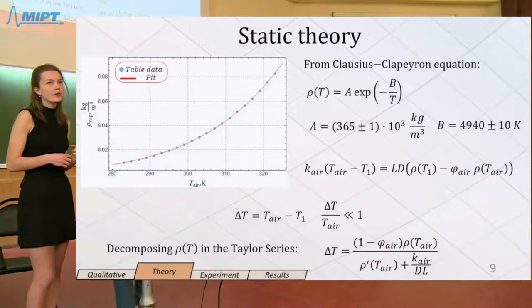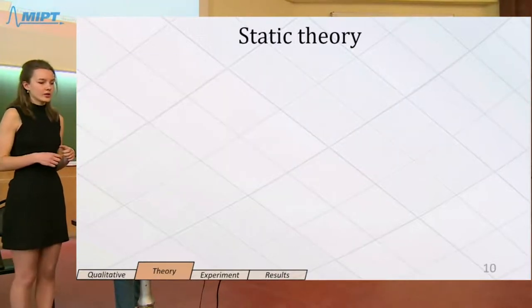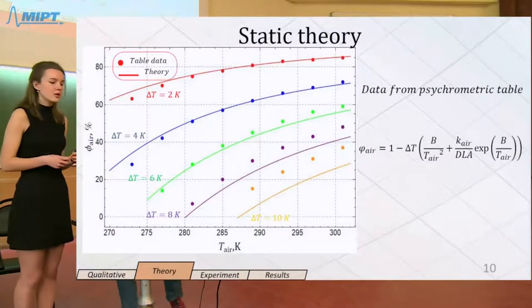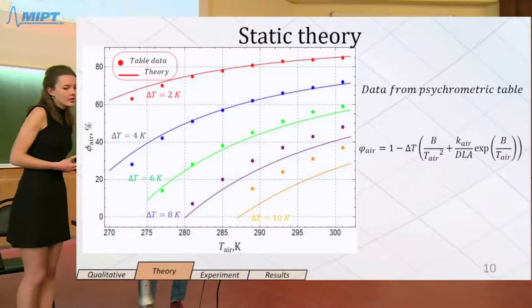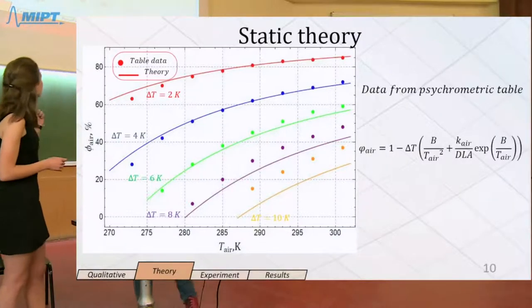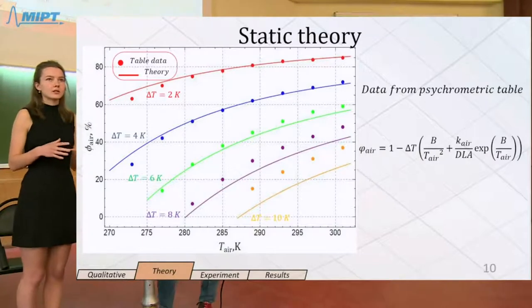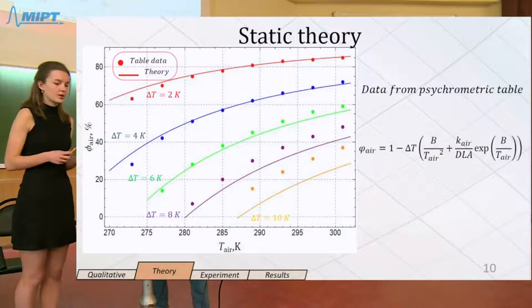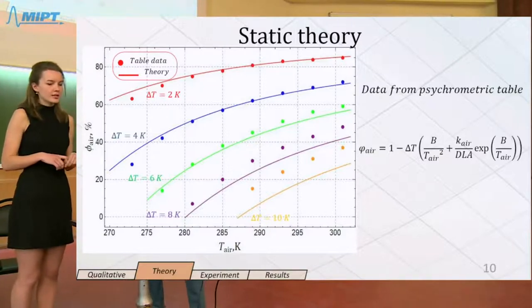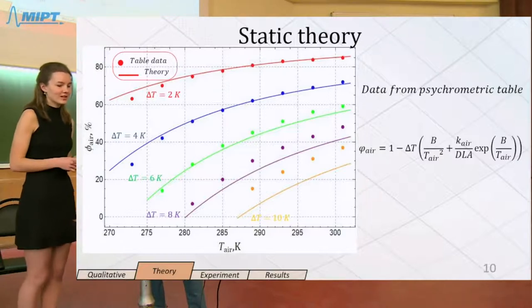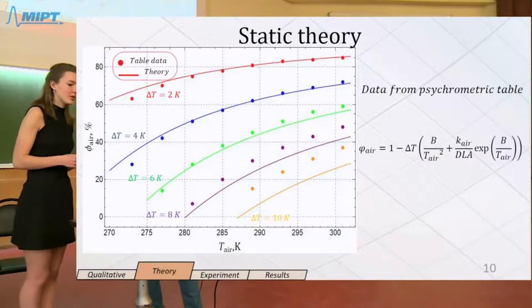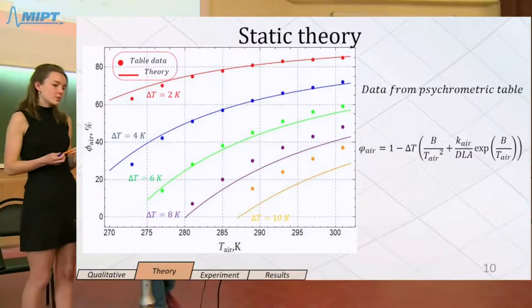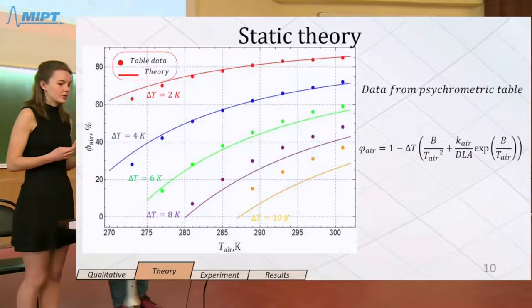To verify our theory, we've plotted a graph of air humidity as a function of air temperature. Temperature difference on this graph is the difference between wet and dry thermometers. We use the data from psychrometric table in order to plot this graphic. As you can see, our theory is in good agreement with experiments, especially when the temperature difference is small.